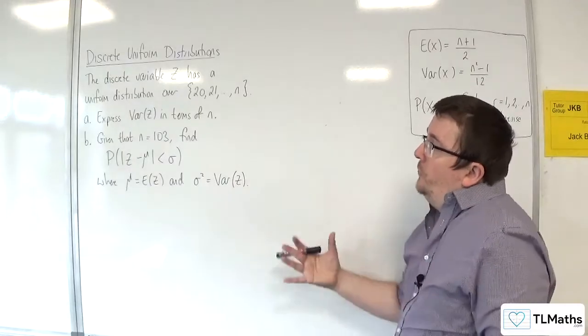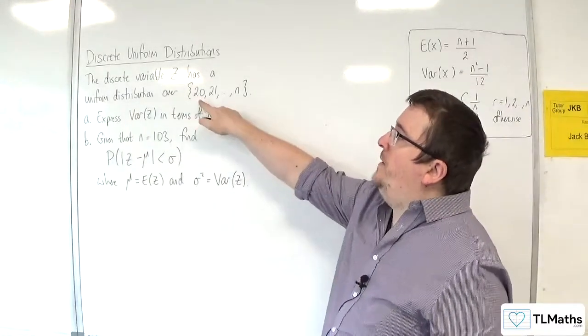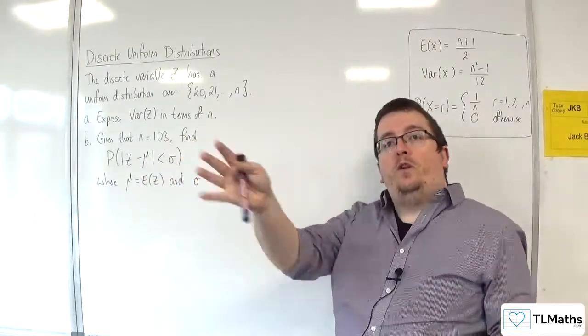In this video, we've got a discrete variable z which has a uniform distribution over 20, 21, 22, 23, all the way up to n.